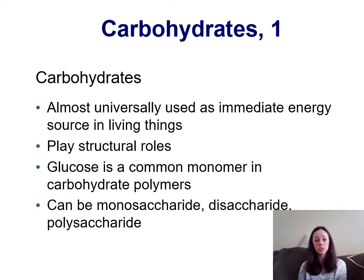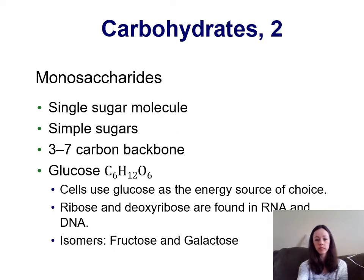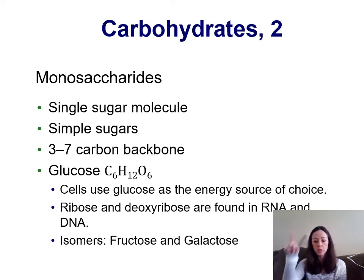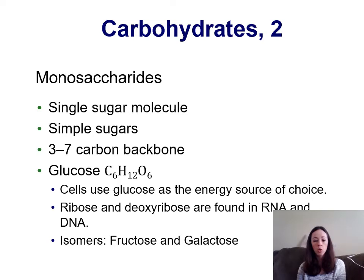Carbohydrates can be either monosaccharides (one sugar), disaccharides (two sugars), or polysaccharides (many sugars). Monosaccharides are also known as simple sugars and can contain between three to seven carbons in their backbone; generally they are made up of carbon rings. The most common monosaccharide is glucose, with the chemical formula C6H12O6, and it is the sugar most often used as the energy source for cells. Ribose and deoxyribose are also common sugars found within cells — deoxyribose is found in DNA and ribose is found in RNA.